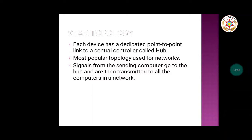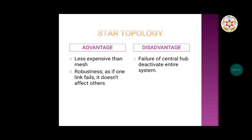Star topology is the most popular topology used for networks. Signals from the sending computer go to the hub and are then retransmitted to the intended receiver. Advantages include being less expensive than mesh because fewer connections are required, and robustness — if one link fails it does not affect the others. If one device is not working, it will not affect any other workstation.